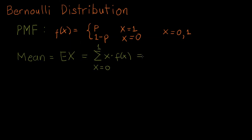This is equal to 0 times — when x equals 0, our probability is 1 minus p — plus 1 times — when x equals 1, our probability is p. So the first term is 0, and then we have 1 times p, which equals p. So the mean equals p.